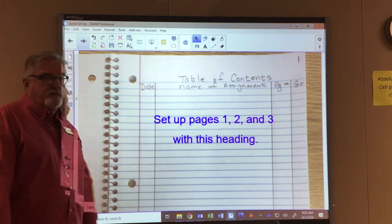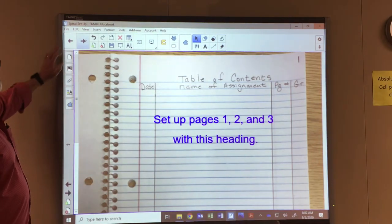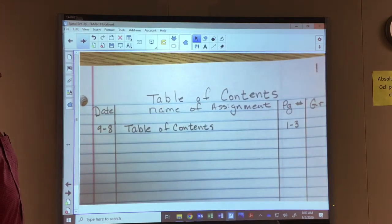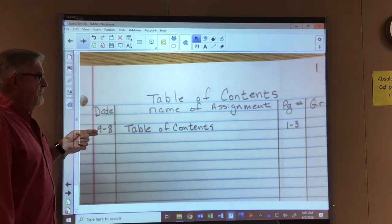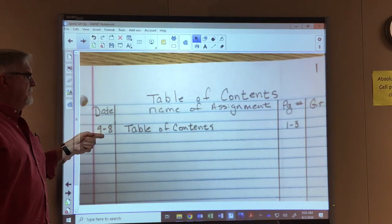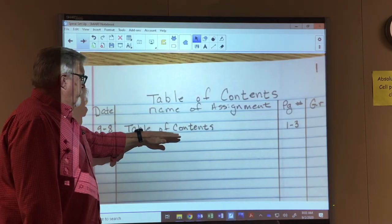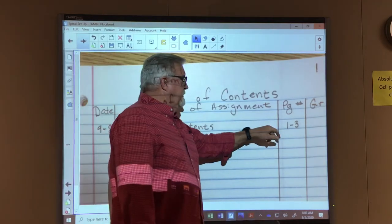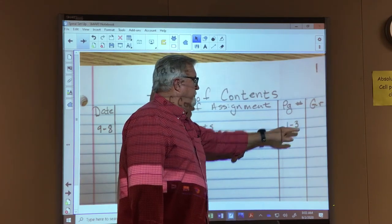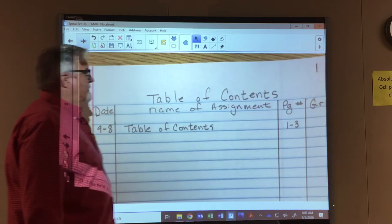Alright, now that we got our table of contents set up, our first entry should be the table of contents. So we put today's date, which is nine eight, we put table of contents as the name of the assignment, we did it on pages one, two, and three, so all you have to do is put one through three here. There's no grade, so we can leave that blank.